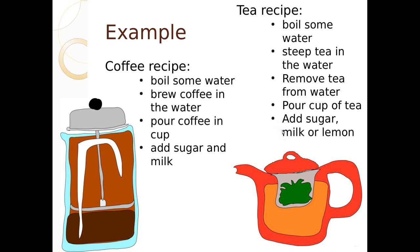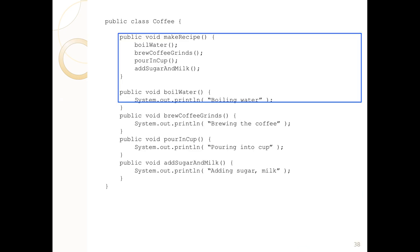We could actually generalize this as: boil water, insert/brew or steep, then do an extra step, and then pour into a cup and add condiments. So we can have our public class recipe represented by this — a make recipe which boils water, brews coffee grinds, pours in cups, and adds sugar and milk.